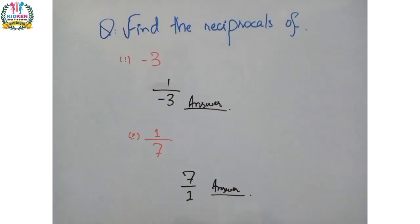The next question is: find the reciprocal. In a reciprocal, simply convert the numerator into the denominator and the denominator into the numerator. For number 1, we have minus 3, written as minus 3 upon 1. Converting to reciprocal gives 1 upon minus 3. The second part is 1 upon 7 — converting numerator and denominator gives 7 upon 1.